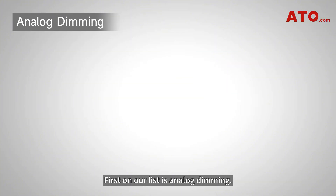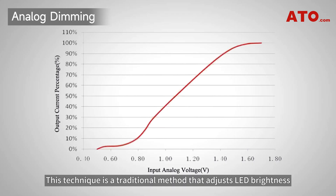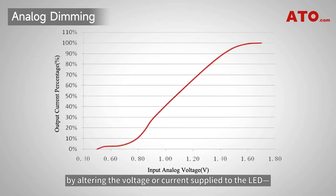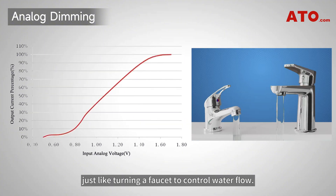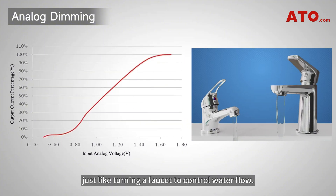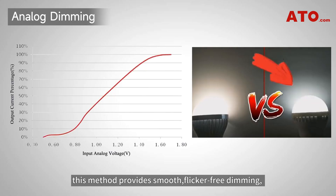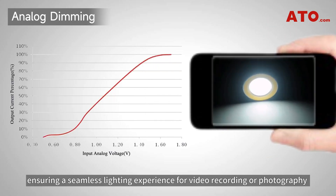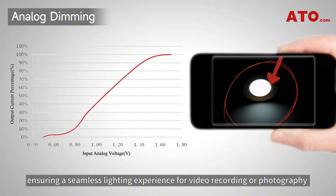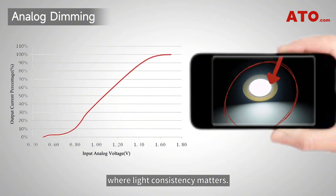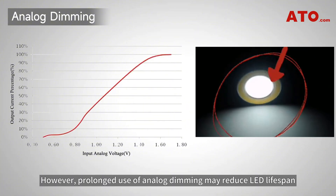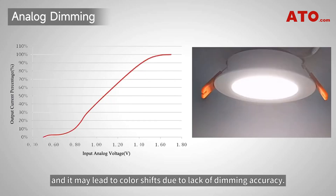First on our list is analog dimming. This technique is a traditional method that adjusts LED brightness by altering the voltage or current supplied to the LED, just like turning a faucet to control water flow. Simple and cost effective, this method provides smooth, flicker-free dimming, ensuring a seamless lighting experience for video recording or photography where light consistency matters. However, prolonged use of analog dimming may reduce LED lifespan, and it may lead to color shifts due to lack of dimming accuracy.